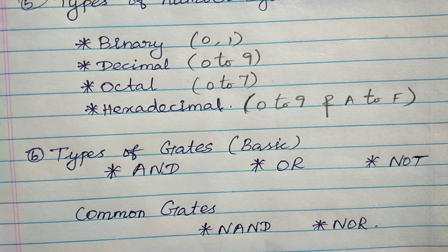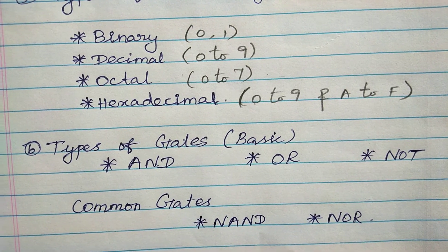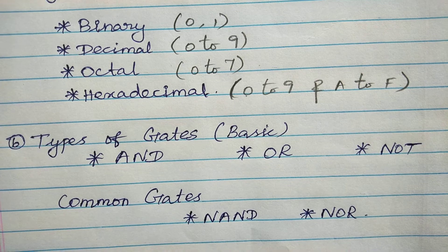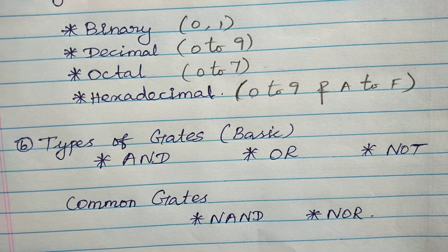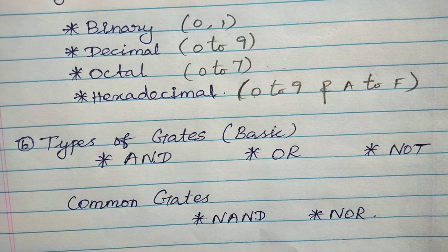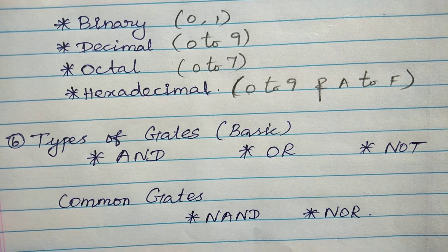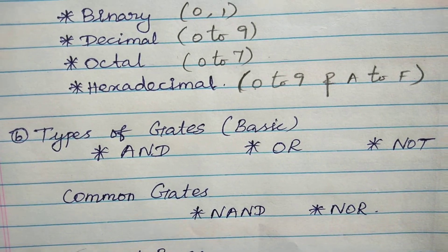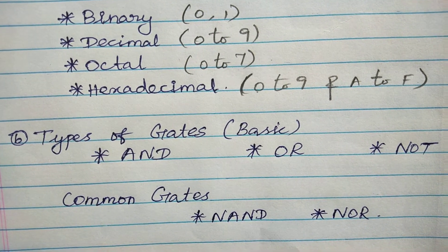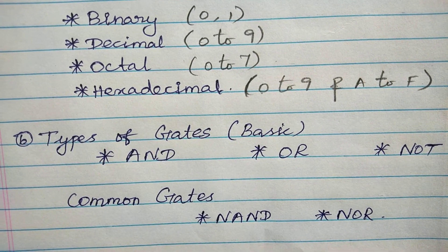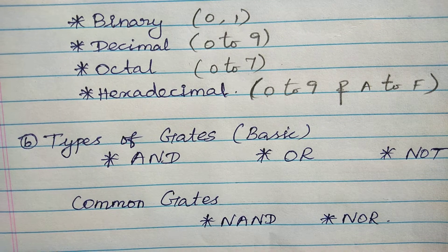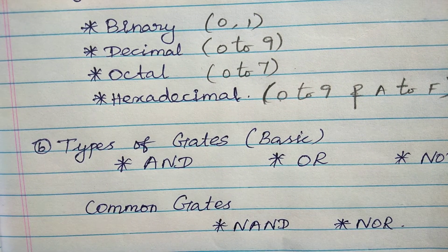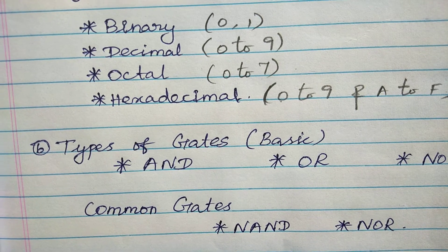Then the sixth question: types of gates. Two types of logic gates are available — basic types and common gates. Basic types are AND, OR, NOT. Common gates are NAND and NOR, because NAND is NOT plus AND, and NOR is NOT plus OR.